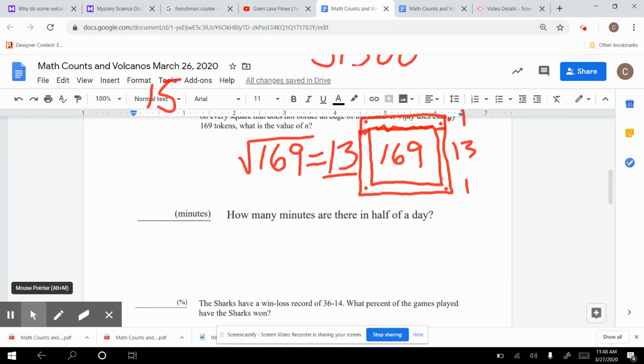Moving on. Next, how many minutes are there in half a day? Well, a day is 24 hours. Let's figure out how many hours there are in half a day, so we're gonna divide this by 2, which gives us 12. So 12 hours is in half a day. Now I'm gonna take that 12 and I'm going to multiply by 60 because there are 60 minutes in one hour. Now we could do this algorithmically.